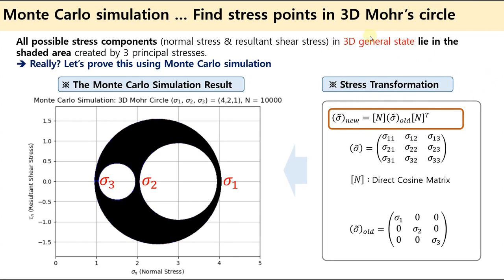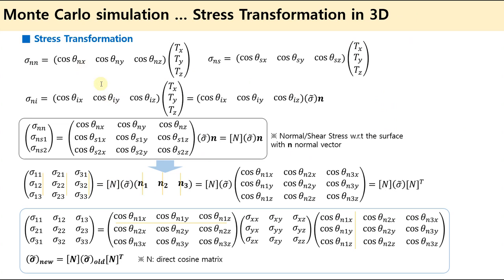Let's derive the stress transformation first. If we have a surface with normal vector N, then we have a column matrix for the traction vector and a row matrix for the direction cosine matrix. Here, sigma_nn means normal stress and sigma_ns means shear stress.